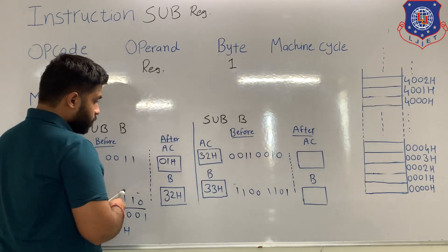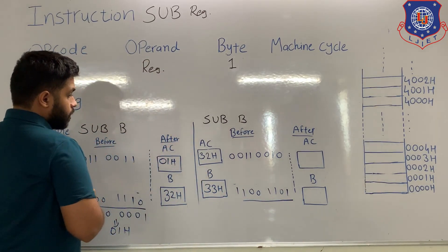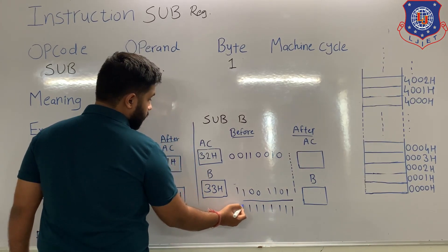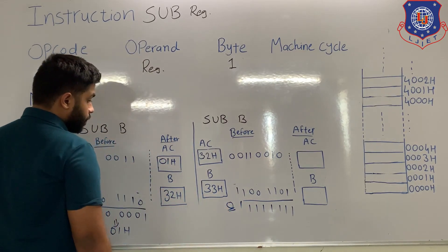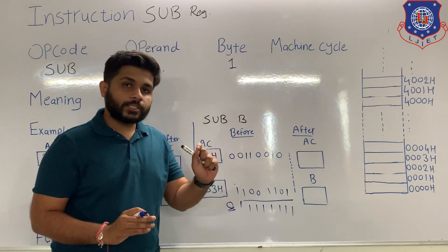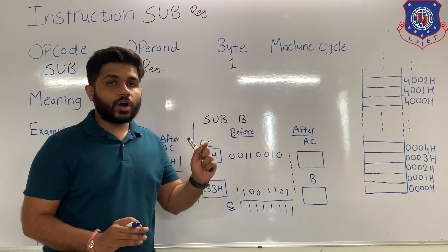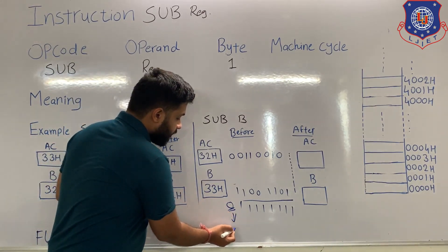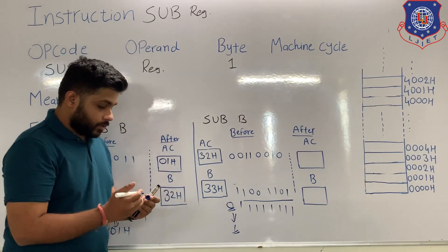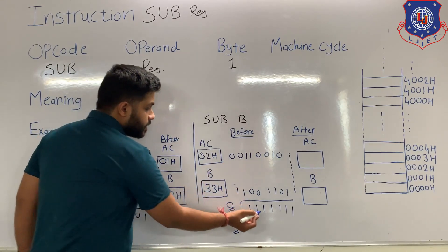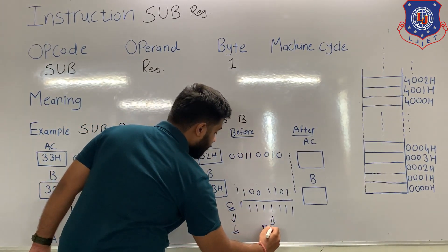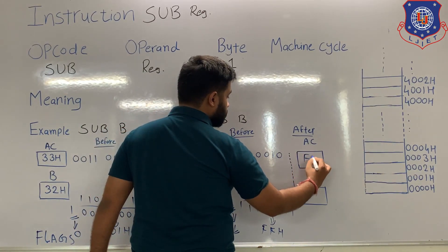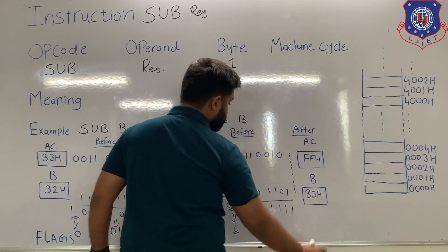After performing the 2's complement, the microprocessor will perform the addition. The result is 11111111 with carry 0. After the subtraction, the microprocessor complements the carry: we got carry 0, so it becomes 1. Converting the result to hexadecimal gives FFH, and carry is 1. After execution, FFH will be stored in the accumulator and register B remains 32H.